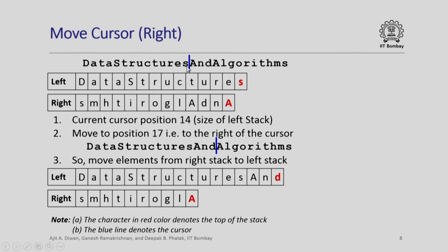Suppose I now want to move the cursor right from position 14 to position 17. I need to move three characters — positions 15, 16, and 17 — from the right stack to the left stack. After this move, my stacks are updated accordingly with the cursor now at position 17.